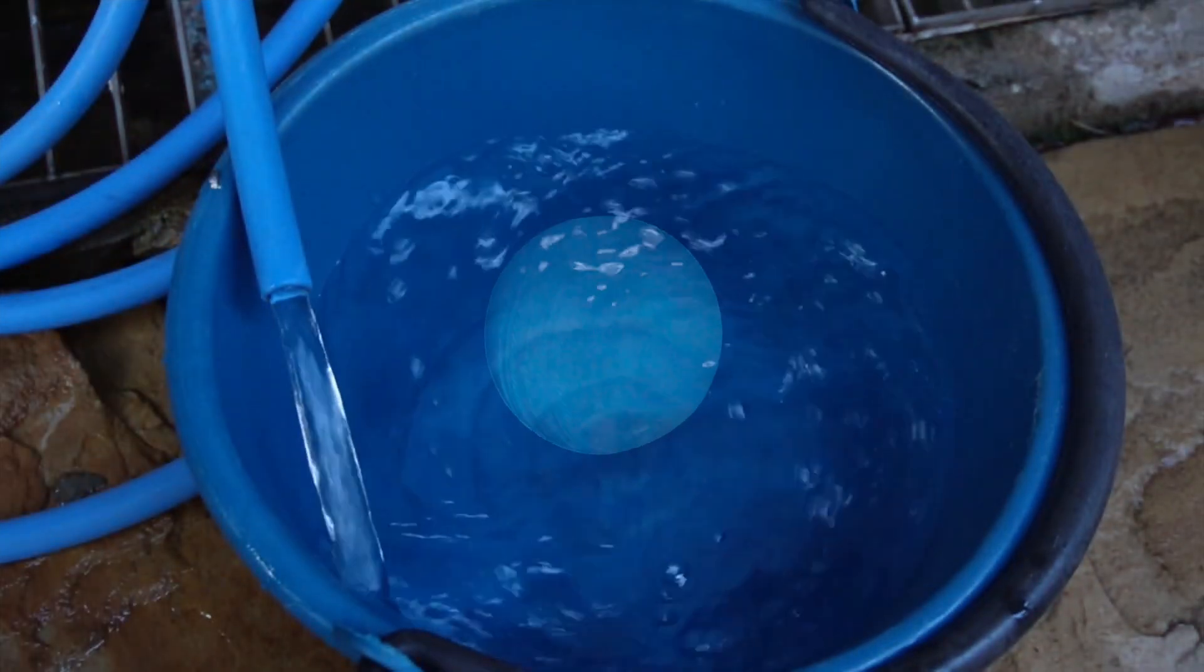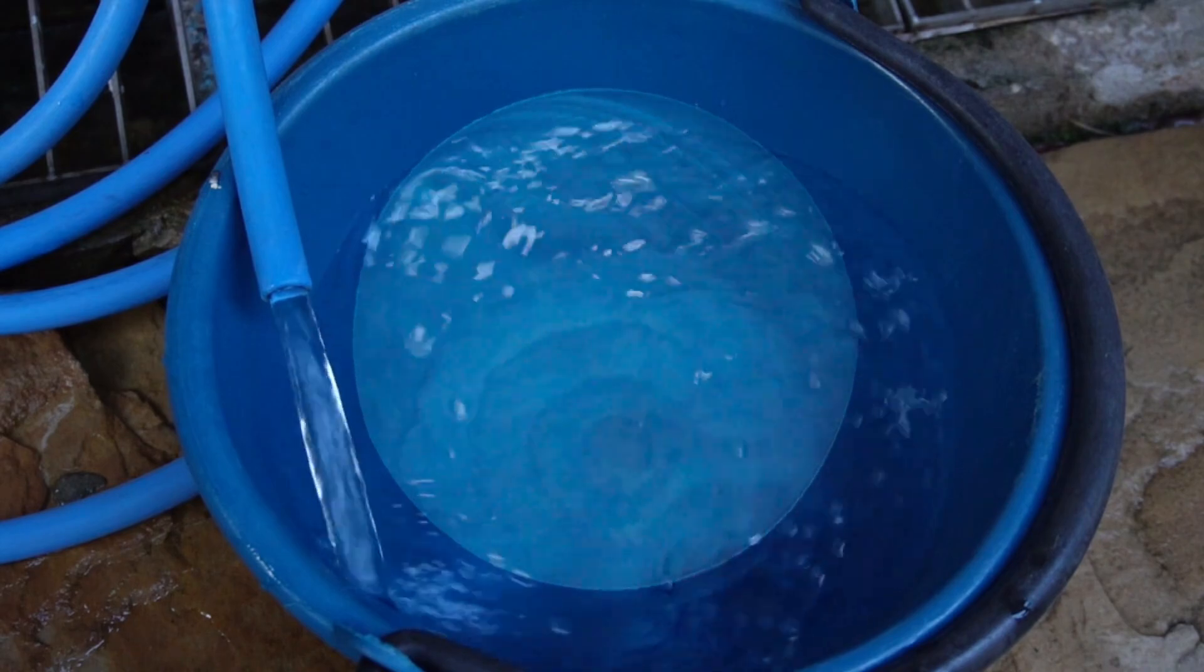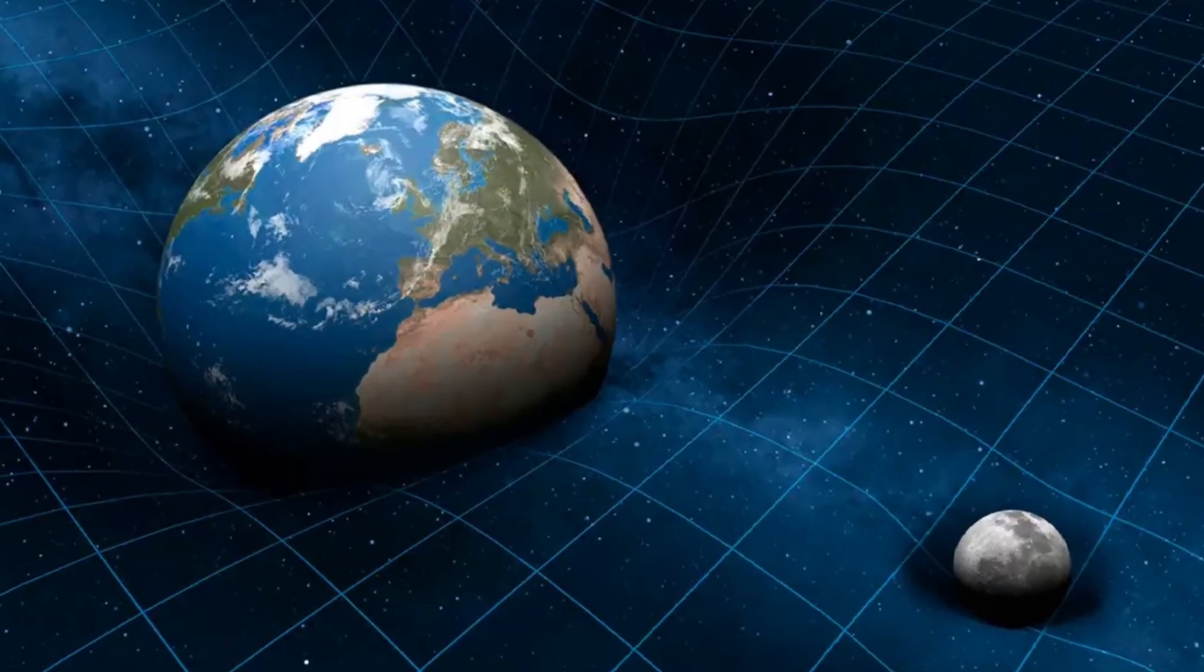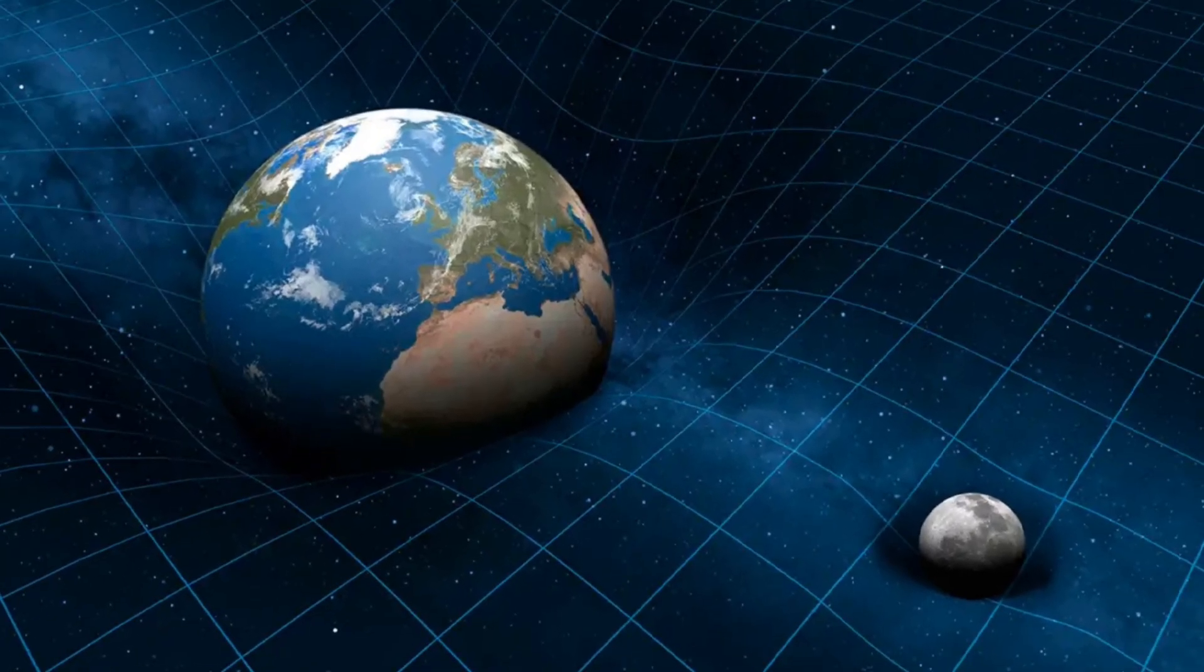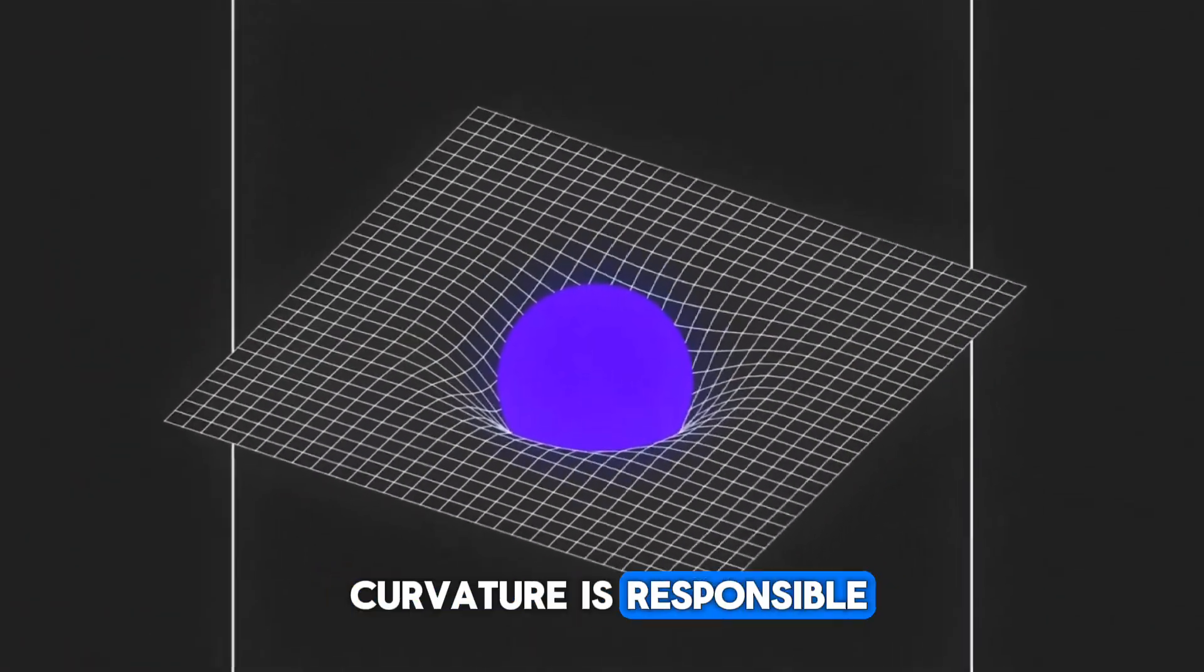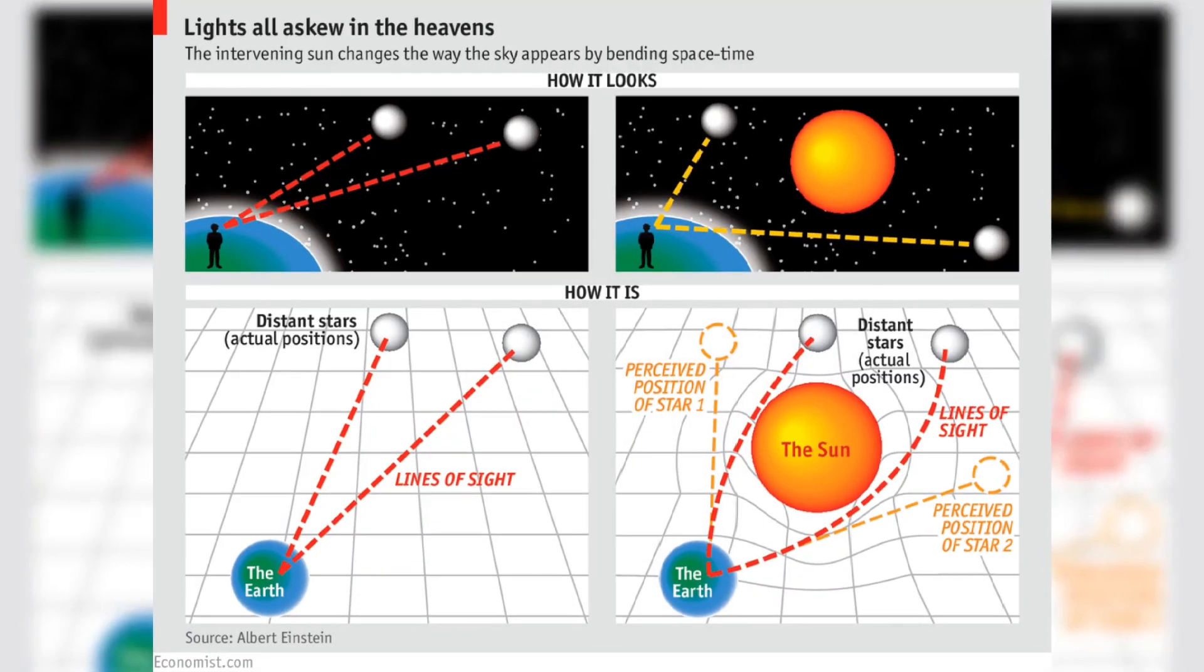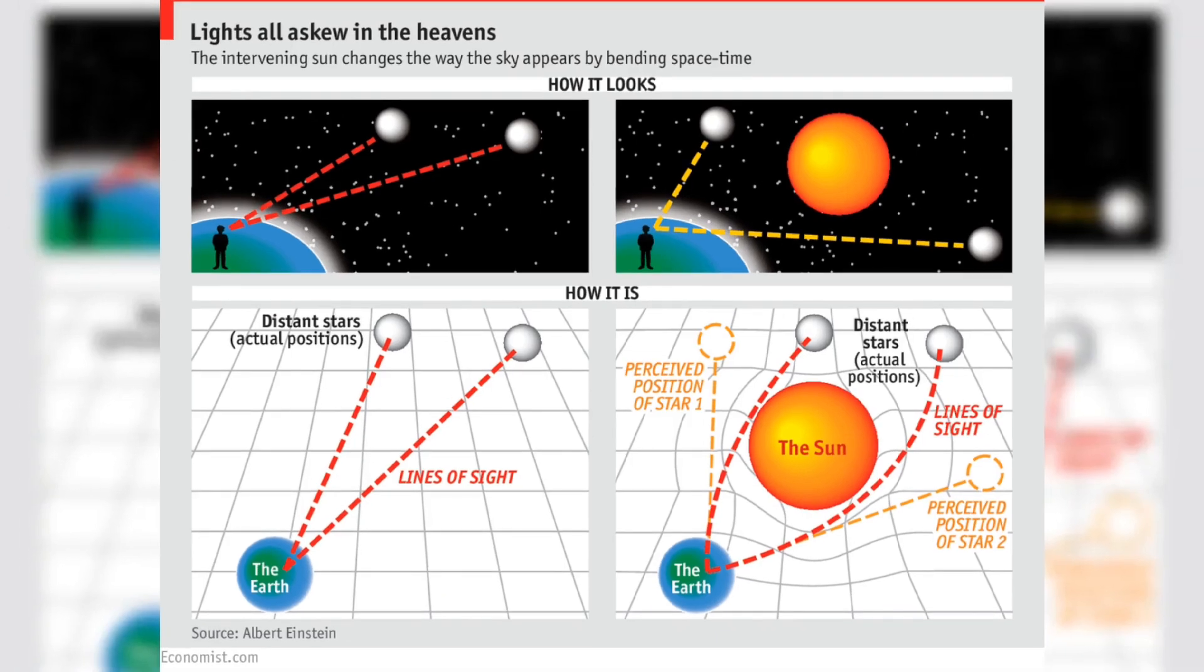Consider a bucket filled with water. When you place a ball inside, the water level rises in response to the space the ball occupies. Archimedes' principle illustrates this, attributing the rise in water level to gravity. Similarly, when an object is introduced into spacetime, the more space it occupies, the more it influences the surrounding spacetime, creating a curvature. As per the general theory of relativity, all objects are initially in a state of free fall moving along straight lines.